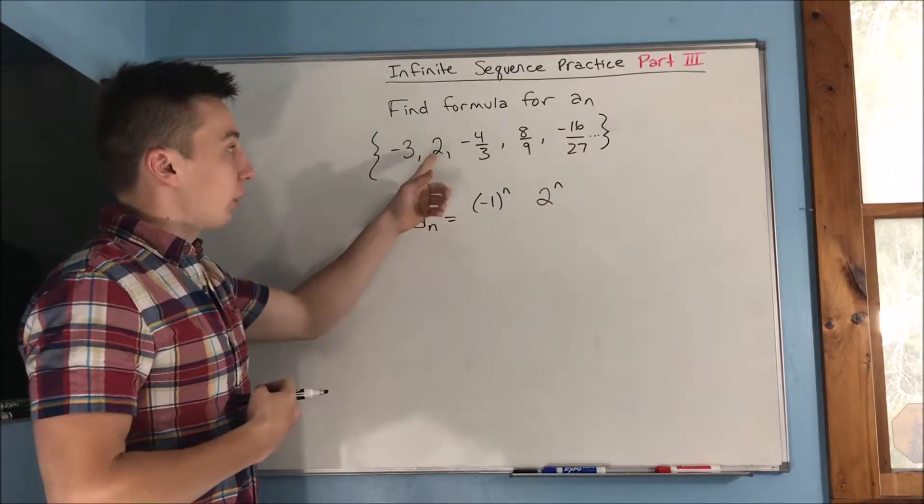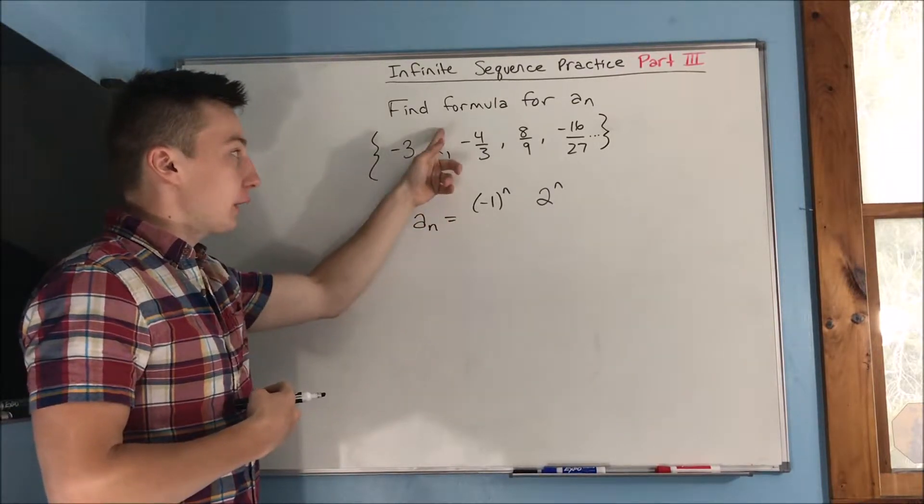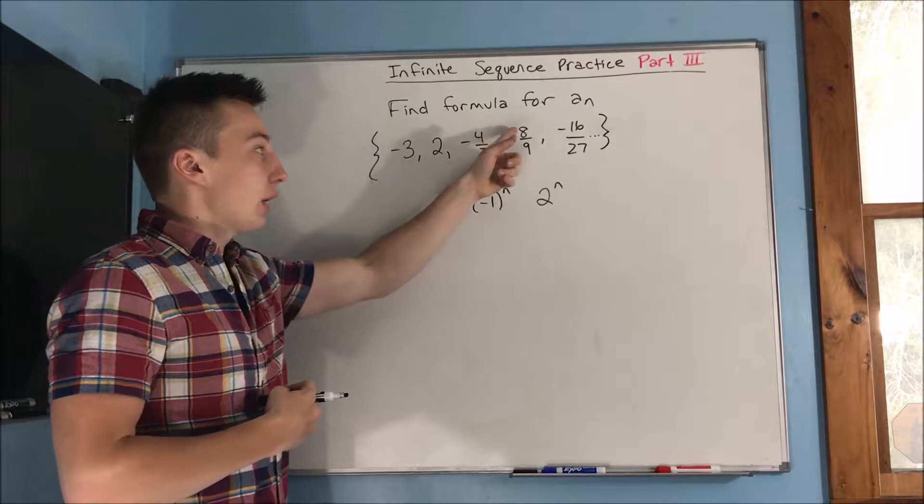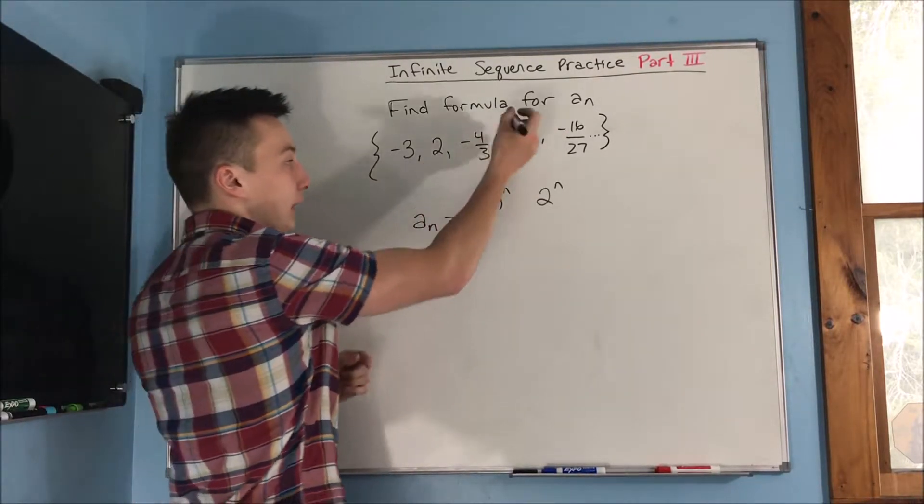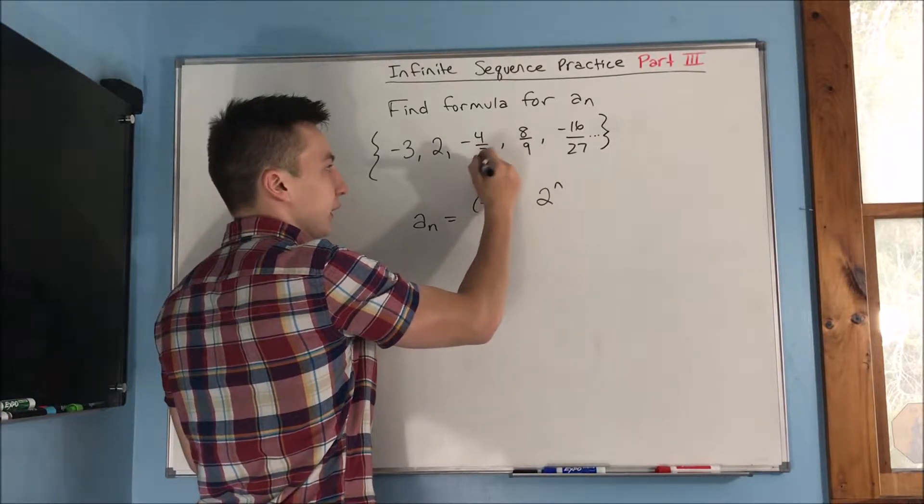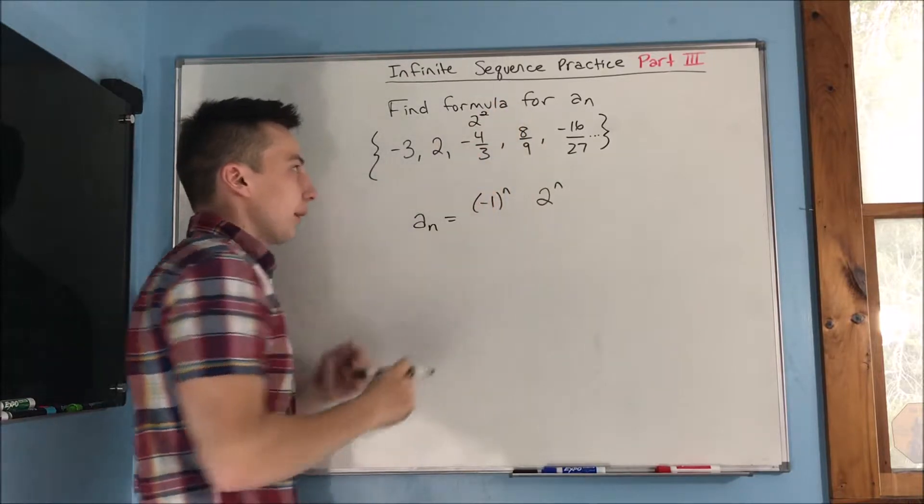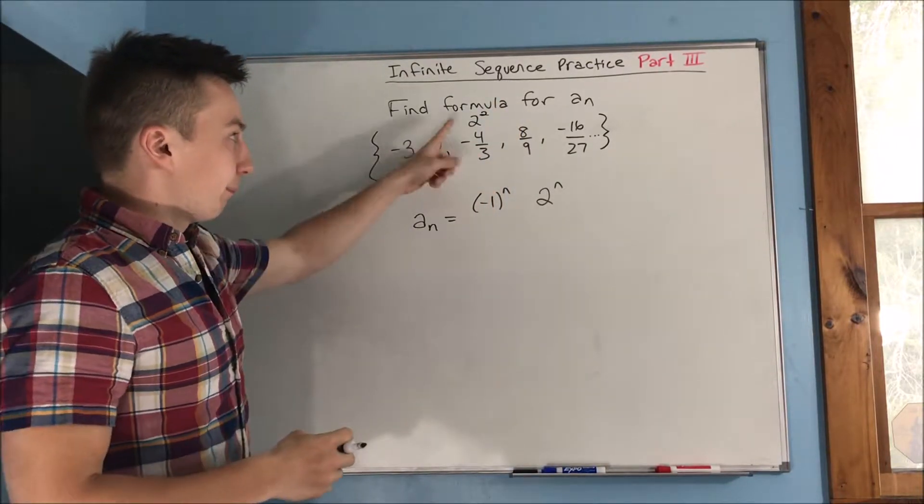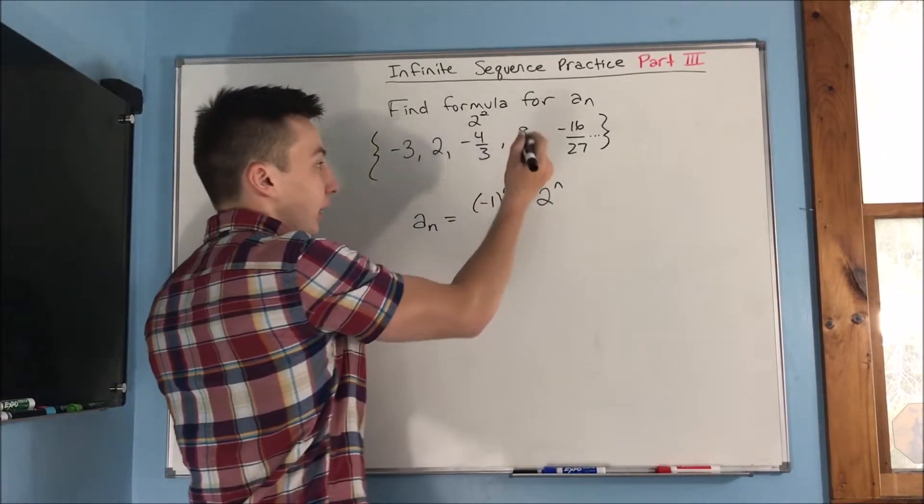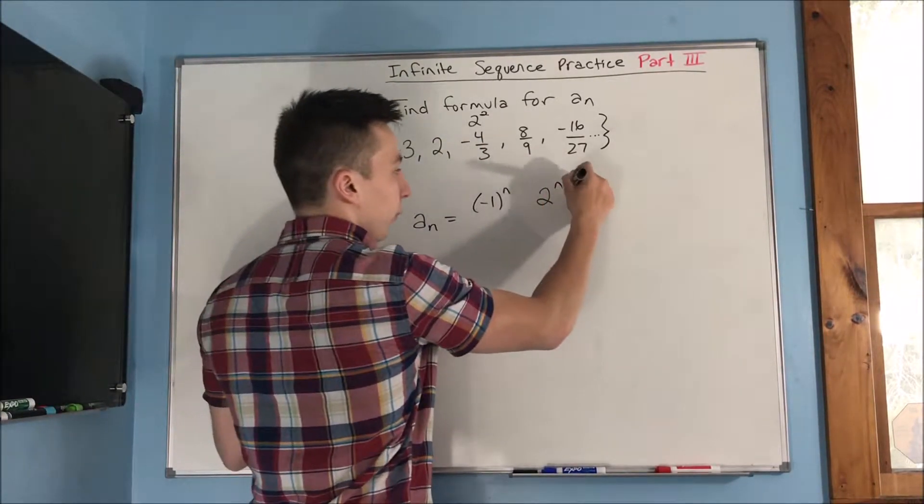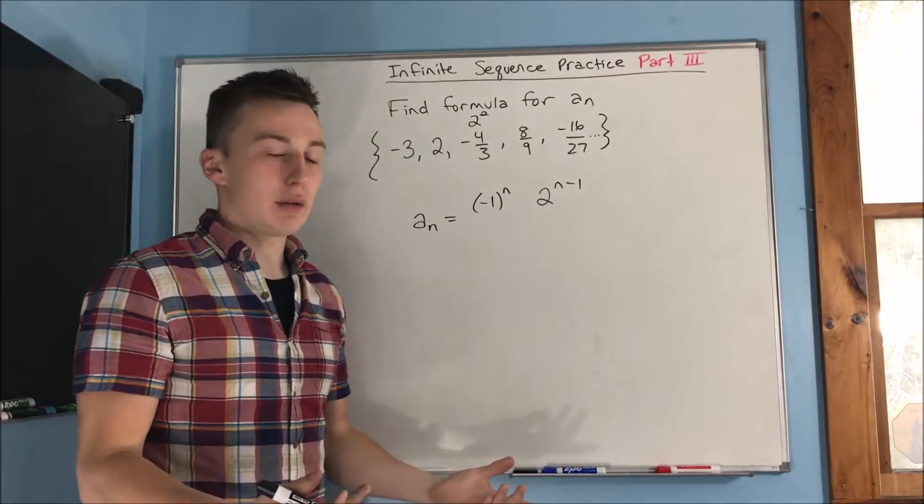Now think about it here. So we must have a one in the denominator here, because this would be two to the first power. This is two to the second power, two to the third, two to the fourth. So if this third term here is two to the second in the numerator, we'll write a little two to the second up there. Well, that is just n minus one, because this is actually just the third term. So if we make this n minus one, that will give us two to the second power.